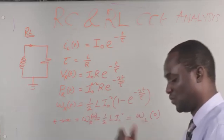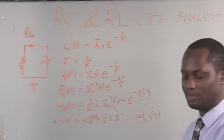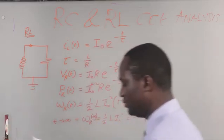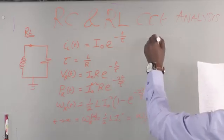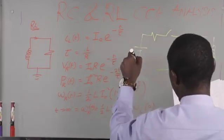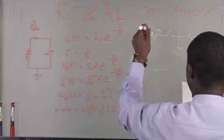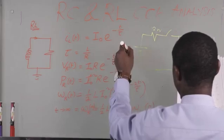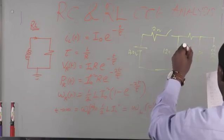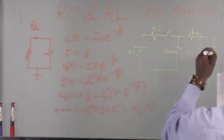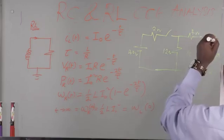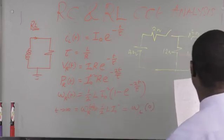Having seen all these expressions, we can now quickly solve some problems. The circuit we are given has the following values: 2 ohms, 40 volts, 12 ohms, 16 ohms, 4 ohms, and an inductor of 2 Henry. We are asked to find the current I flowing through that particular inductor.